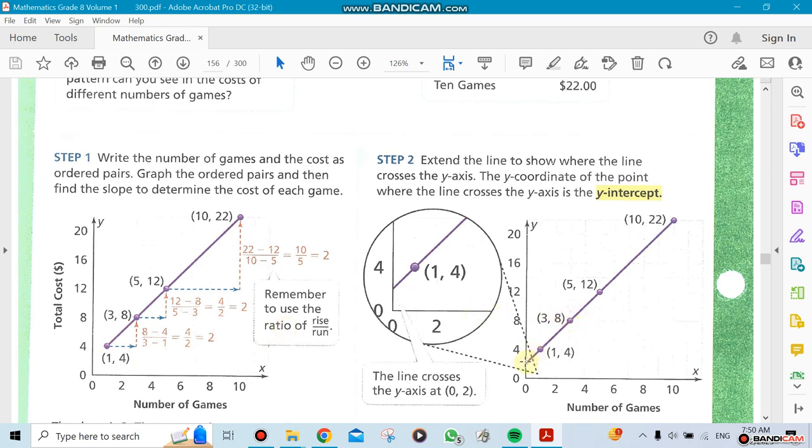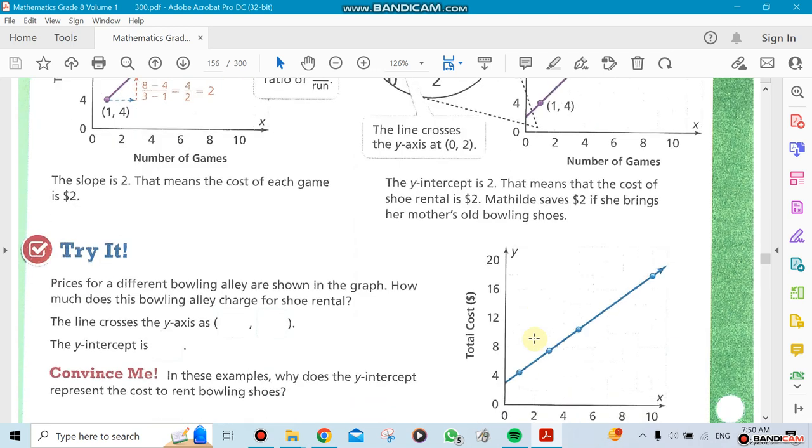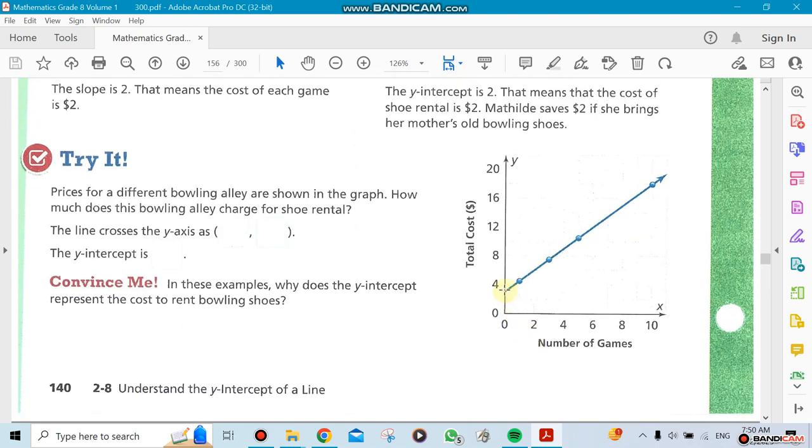This point here exactly is the y-intercept - the point that hits the y-axis. It has an x value of zero and a y value. A y-intercept always has x equal to zero and y has a value. The y value could be zero, one, negative, or positive - it doesn't matter, but it has a value. You can see that the x is always zero, and that's what makes it a y-intercept.